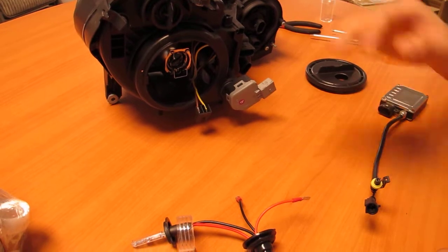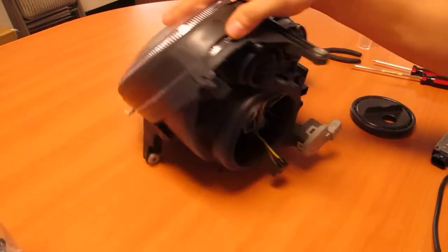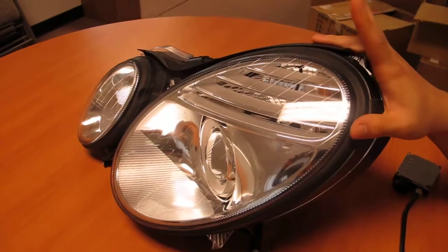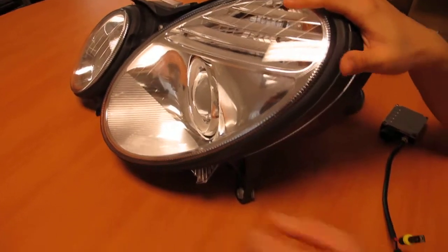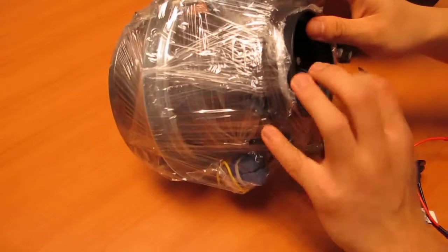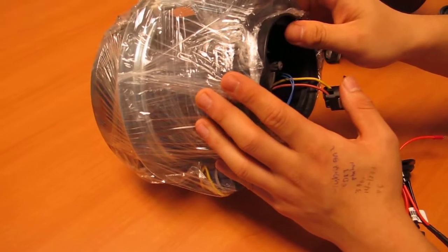I have two headlights on my desk. One instance is going to be for the W211 chassis, which is an E-Class Mercedes-Benz headlight. Also, I have a G-Class headlight right here, which is also a 463 chassis.